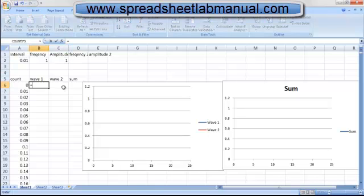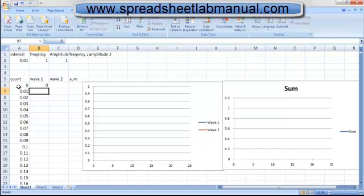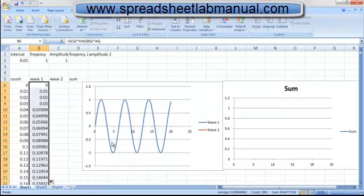our first wave will equal the amplitude times—which we're going to lock in using dollar signs. To do that, you press F4—and that's times the sine of the frequency, which we're going to lock in by pressing F4, times the count, and close parentheses. We're going to double click, and that's going to send us down to row 2006.